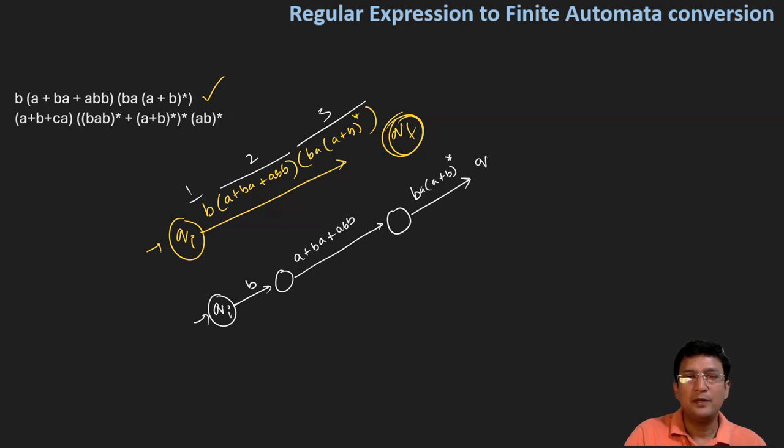Okay, so this is the final state. After this, you can see that in this part there are plus signs. Plus means union, which represents in finite automata that there will be three separate paths.